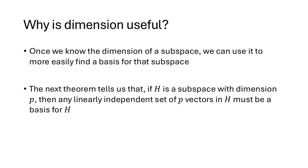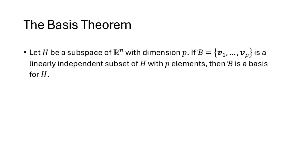One of the ways that dimension is useful is that it gives us an easier way to construct a basis for a given subspace. If H is a subspace with dimension P, then any linearly independent set of P vectors in H must be a basis for H. So if we know the dimension of a subspace, all we need to do is find a linearly independent set with the correct number of vectors, and that will automatically be a basis. The theorem states: let H be a subspace of Rn with dimension P. If script B, the set containing V1 through VP, is a linearly independent subset of H with P elements, then script B is a basis for H.